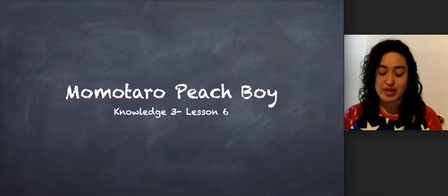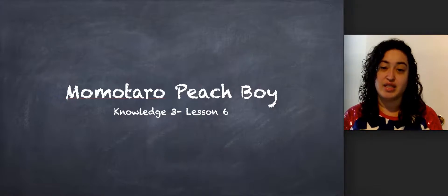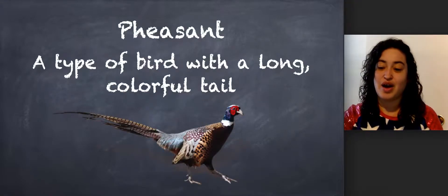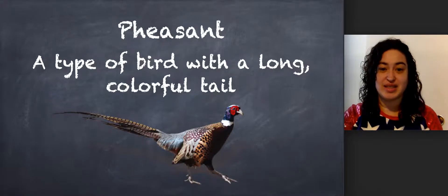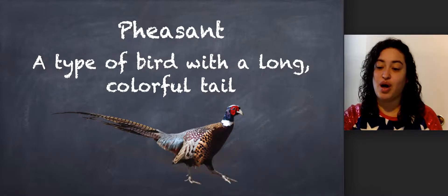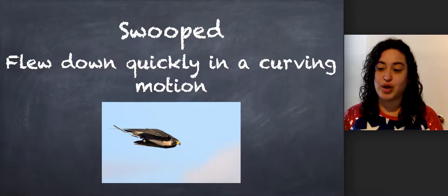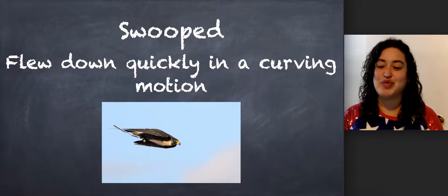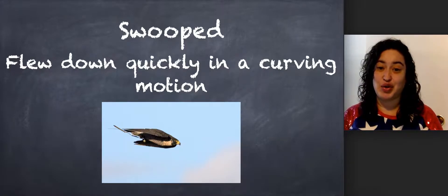The folktale that you're going to hear today comes from the country of Japan. So the setting of today's folktale is Japan. But before we get started let's go over some vocabulary. Our first word is pheasant. A pheasant is a type of bird with a long colorful tail. And our last word is swooped. Swooped means flew down quickly in a curving motion.